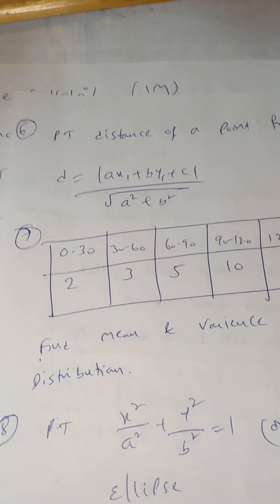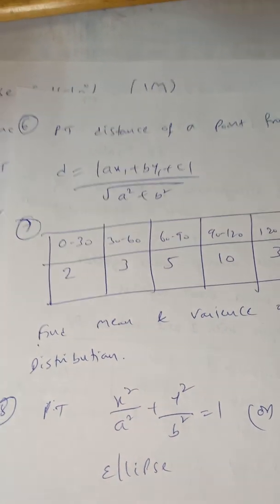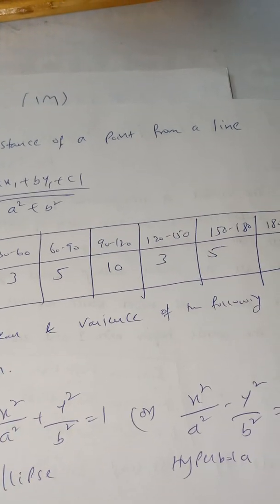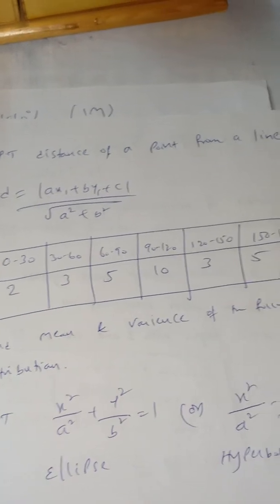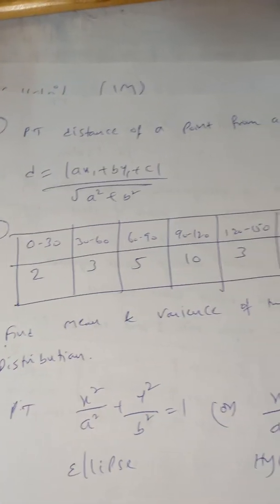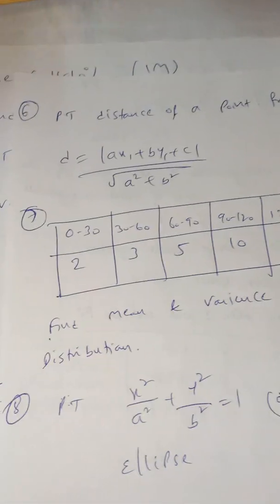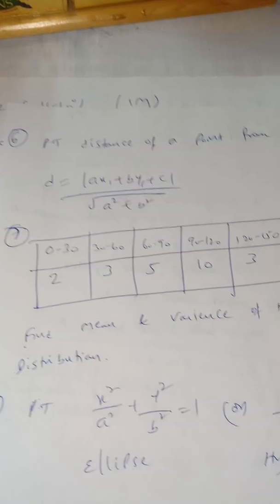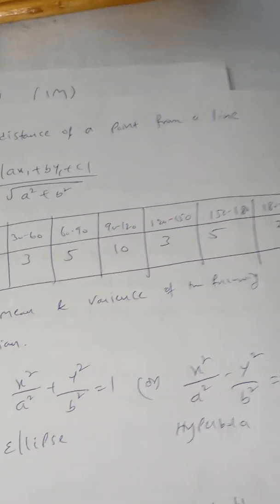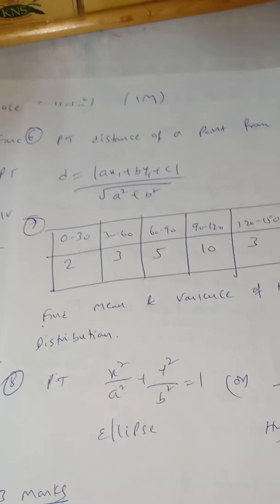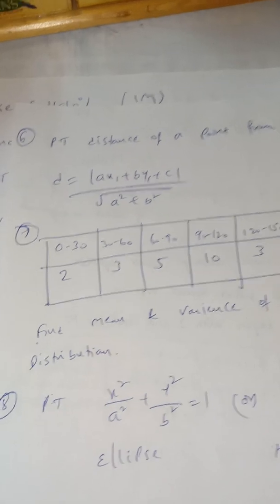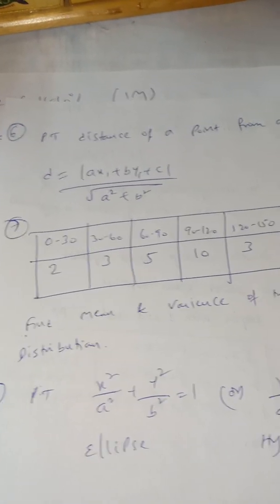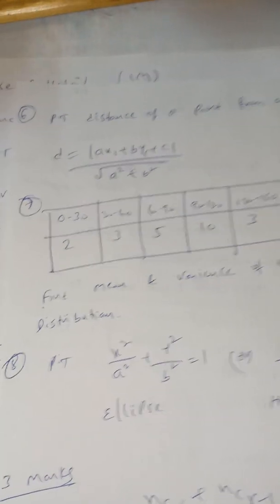Another 5-mark question is in statistics. Given the class intervals 0–30, 30–60, 60–90, 90–120, 120–150, 150–180, 180–210 with frequencies 2, 3, 5, 10, 3, 5, 2, find the mean and variance of the following distribution. If they do not ask mean deviation about mean or median, they can ask mean and variance of the distribution. This is also very important in the last minute revision for 1st PUC.